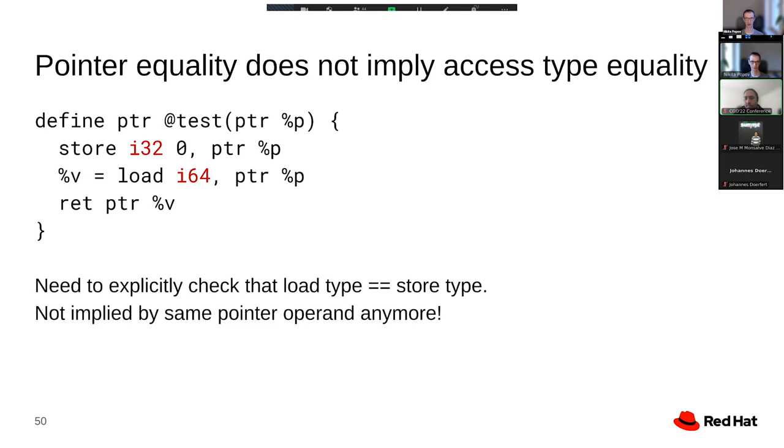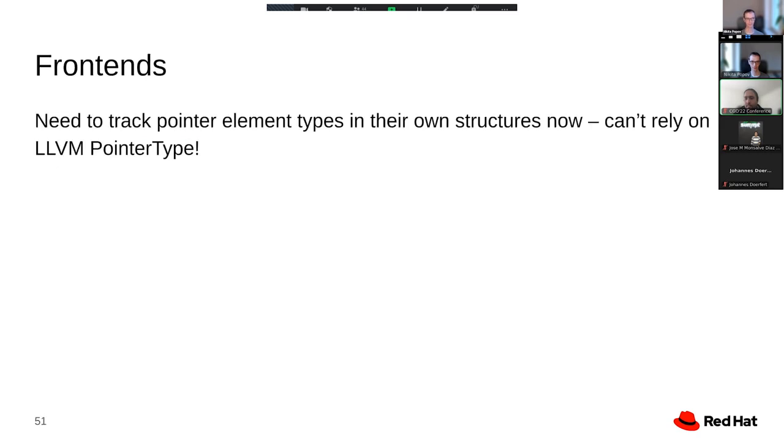We do that by adding an explicit check that the load type and the store type are the same. This is one of the primary ways in which code written for typed pointers will break with opaque pointers in a non-obvious way that you will hit when doing actual testing.